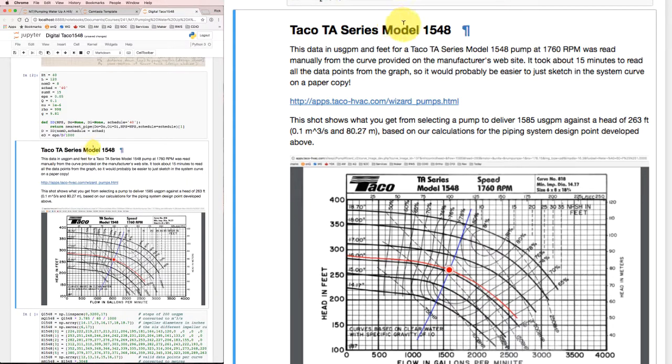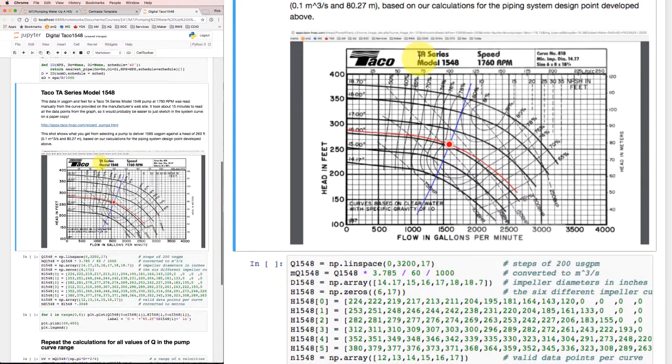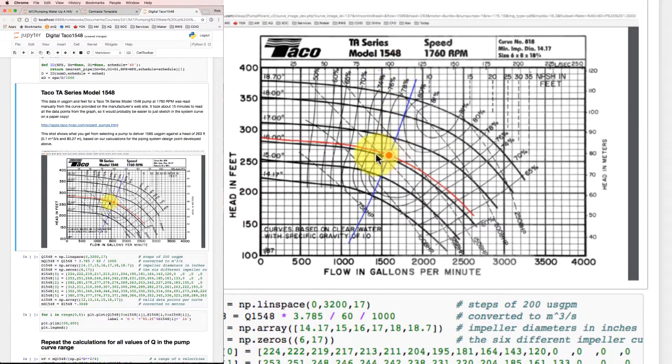Having set all of those values, we need to have a pump to work with and a way that we can make some models happen. So previously we've decided that a TACO TA series model 1548 might be a good choice and we went to the TACO pump selection site and we were able to find this graph for our input values of 0.1 cubic meters per second at a head of 80.27 meters.